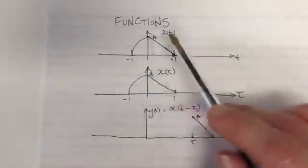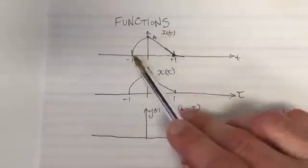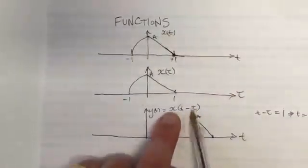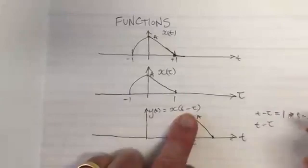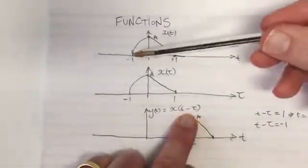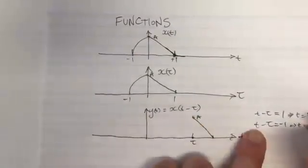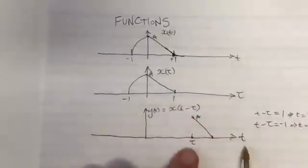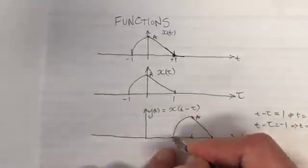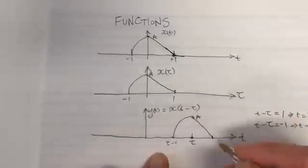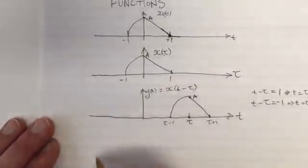Now where did the other interesting part of the graph go? That's when the thing in the brackets equals minus one. So t minus τ equals minus one means t equals τ minus one. So that part of the curve is at τ minus one. This is τ minus one, this is τ plus one, and this is how I think about plotting shifted functions.